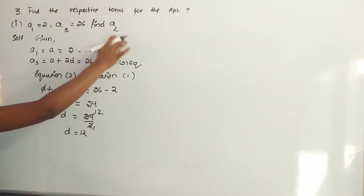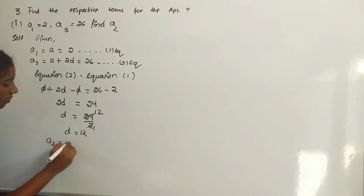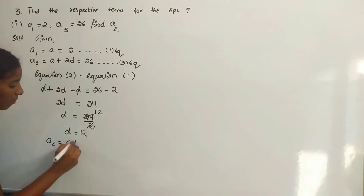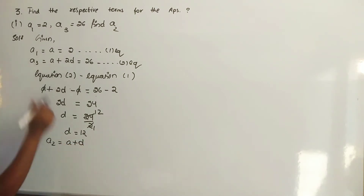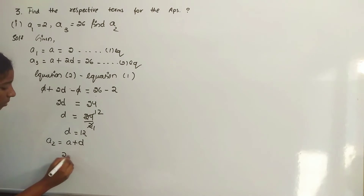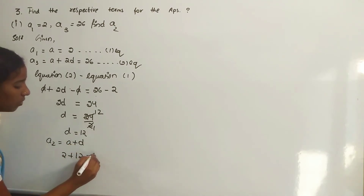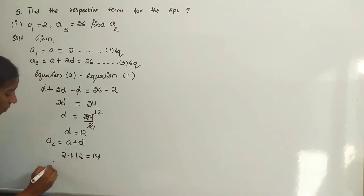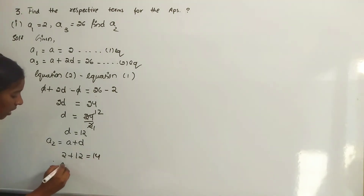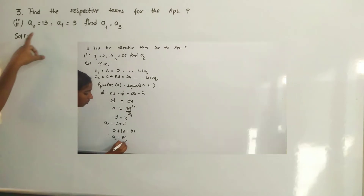We have to find A2. A2 is equal to A plus D. A is 2, plus D is 12, is equal to 14. Therefore, A2 is equal to 14.